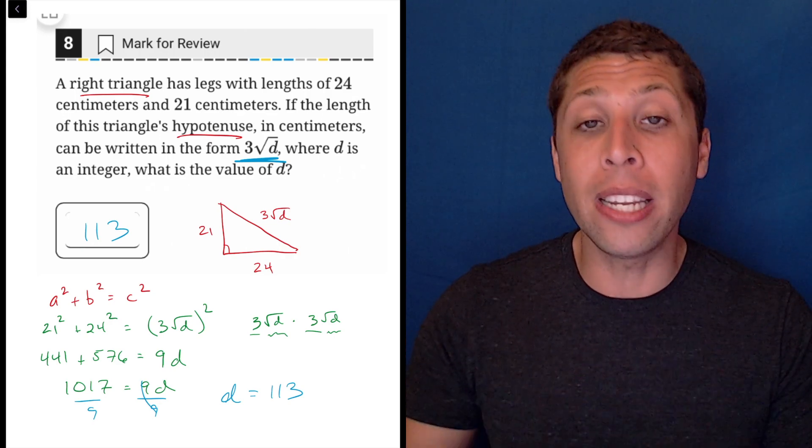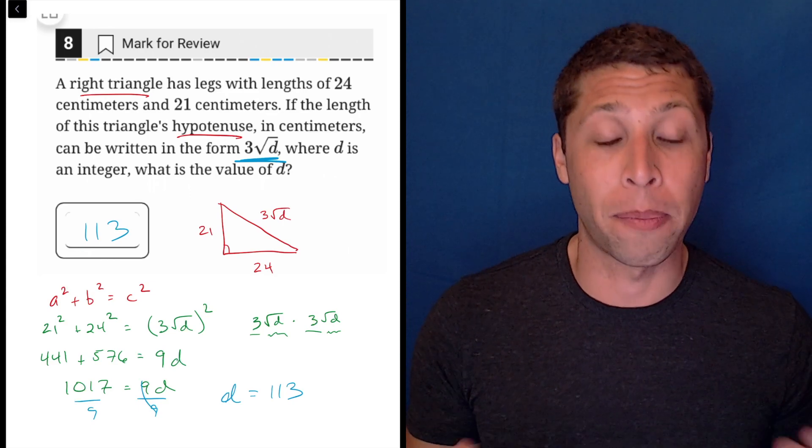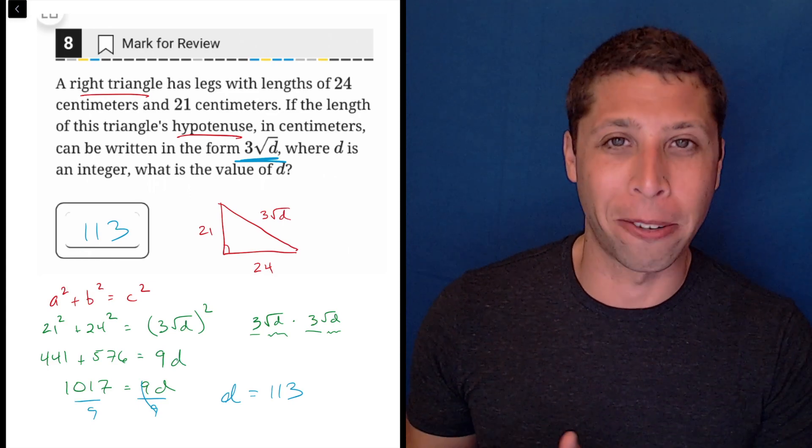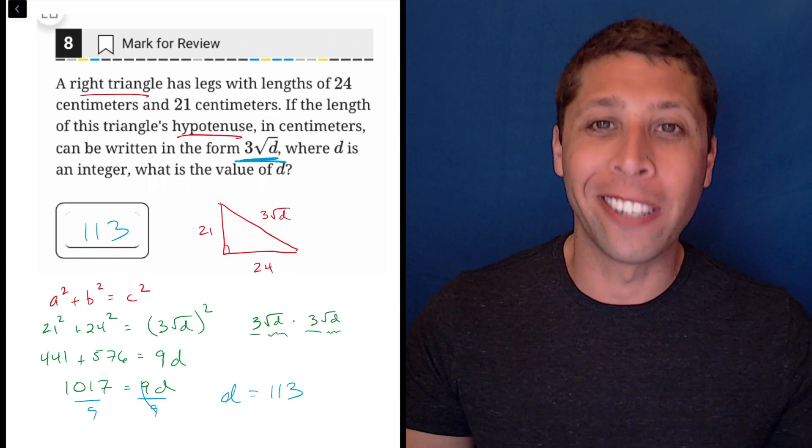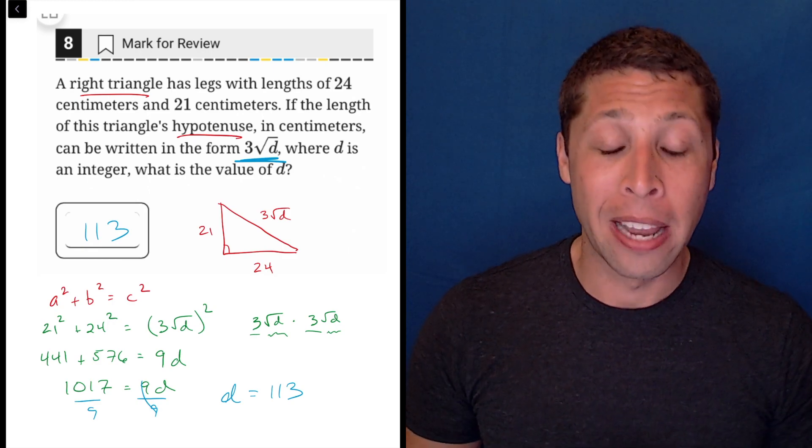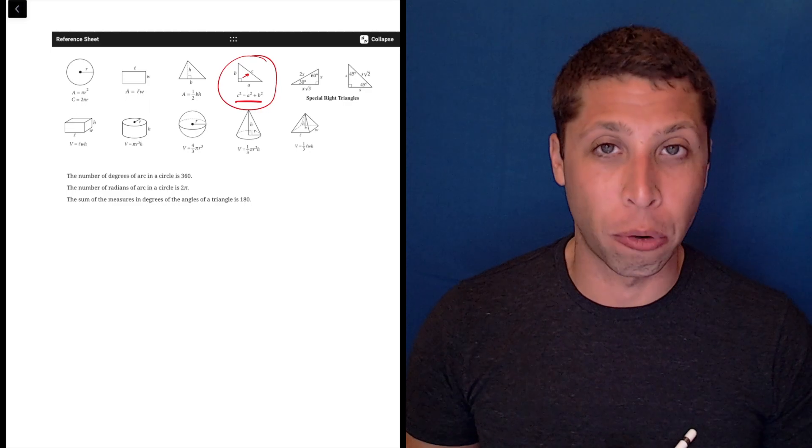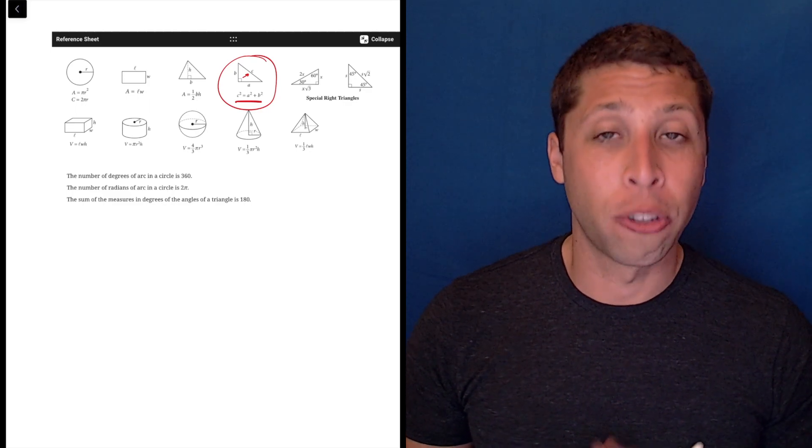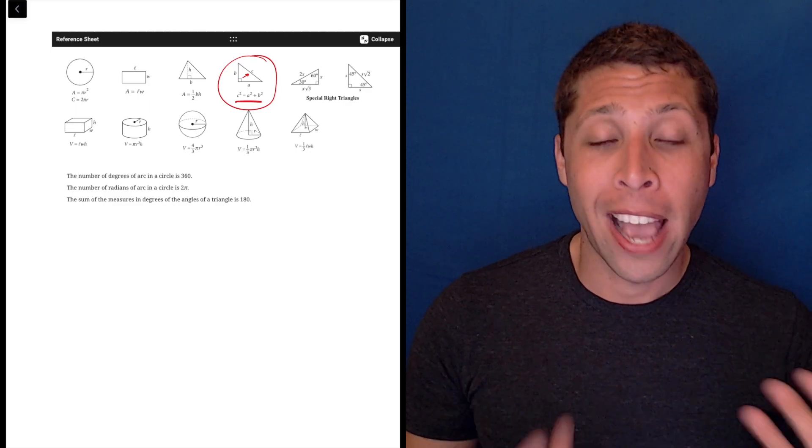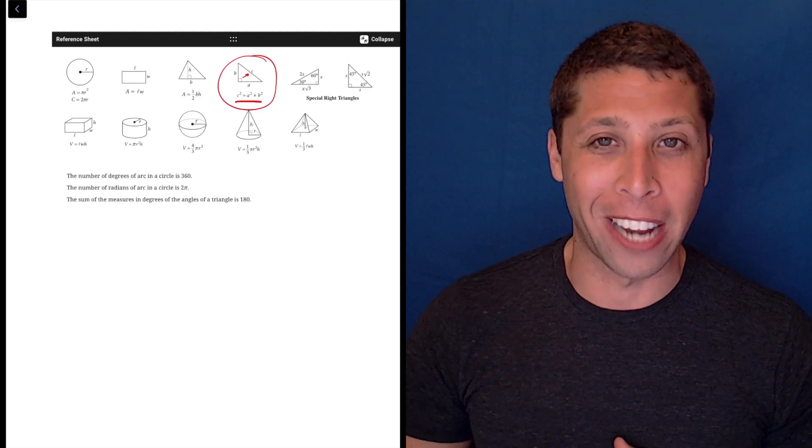You do need to understand how radicals work. Very often that is something you learn right alongside Pythagorean theorem. So hopefully it all is kind of stored in the same part of your brain. But do remember that no matter what, if it's a geometry question, you have these geometry formulas given to you on every math section, so don't be afraid to check those. Maybe it'll move you in the right direction and get you a point that you might otherwise have forgotten.